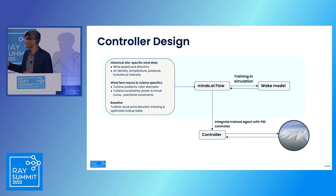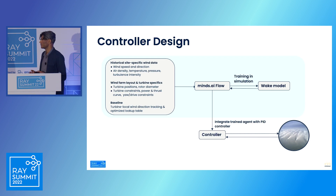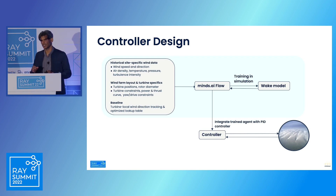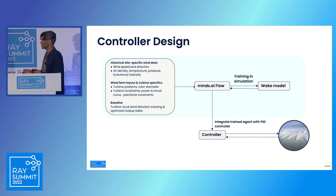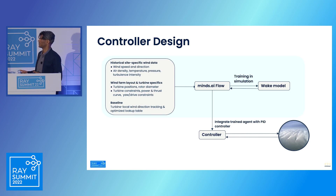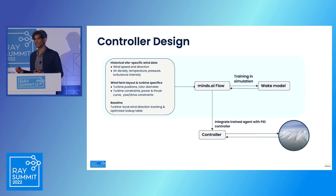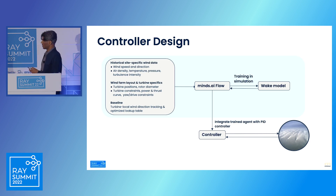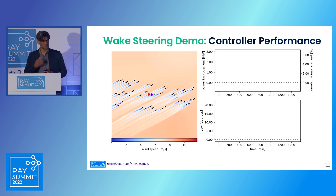One important point is that we use RLlib's multi-agent training. Each turbine is modeled as a single independent agent, but they share the same policy with potentially different experiences. This means you get more data per simulator run — for example, with 50 turbines in a wind farm, you get 50 rows of data per step. Training is therefore much faster and you need to run the simulator fewer times. Now let's see a demo.